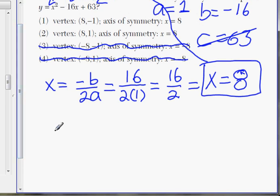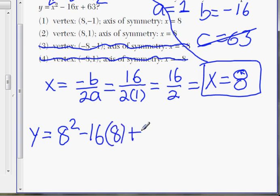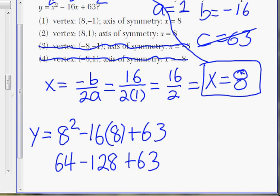Okay, so instead of x squared, we're going to have 8 squared minus 16, and there's another x, so we're going to replace it with 8, plus 63. Let's solve this out. 8 squared is 64, negative 16 times 8, well, that's going to be 128, plus 63. Let's add everything together. 64 minus 128, plus 63, that's going to be negative 1. So y equals negative 1.